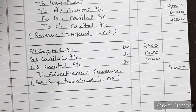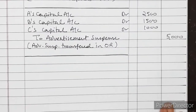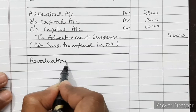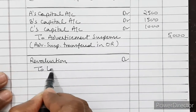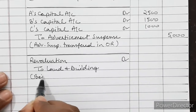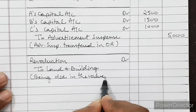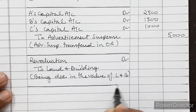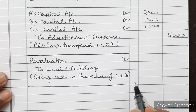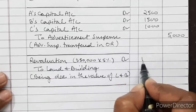Now we come to revaluation of assets and liabilities. Land and building is decreased by 5%. In the balance sheet, land and building is Rs. 3,50,000, and 5% of that is Rs. 17,500. So Revaluation Account debited to Land and Building Account for Rs. 17,500.